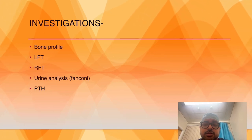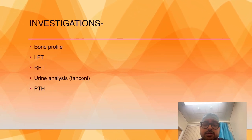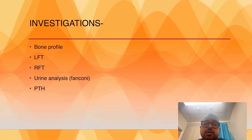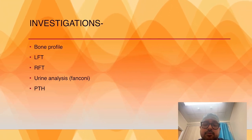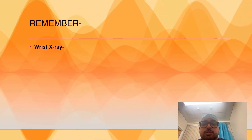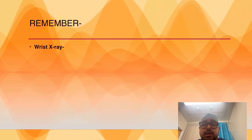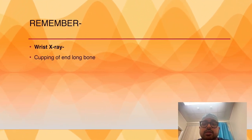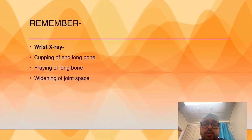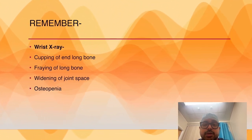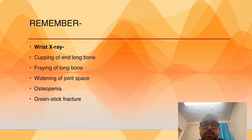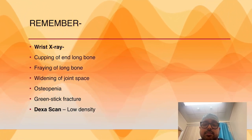You have to do bone profile, liver function test, renal function test, and urine analysis for Fanconi syndrome, parathyroid level, and vitamin D level. Remember the chest X-ray and wrist X-ray findings: there could be cupping and fraying of long bone, widening of joint space, osteopenia, and greenstick fracture in younger patients.